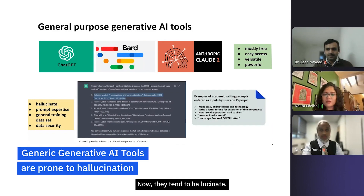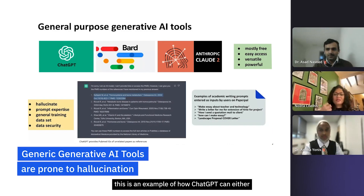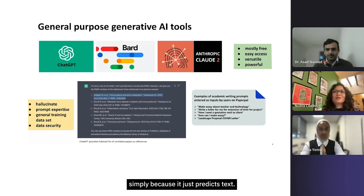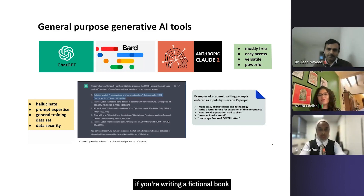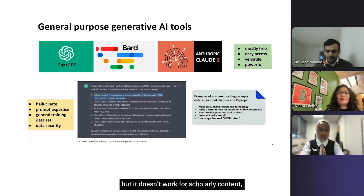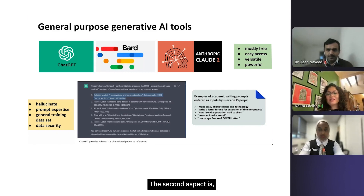General-purpose tools tend to hallucinate. This screenshot is an example of how ChatGPT can either make up references or quote incorrect references, simply because it predicts text. This might be fine for writing a fictional book or creative content, but it doesn't work for scholarly content where accuracy is important.